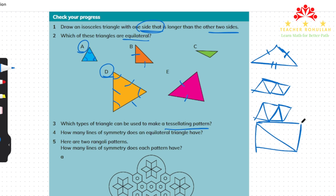If we put the scalene triangles side by side, this forms a tessellating pattern. We can continue making the same thing going on without any gaps between the triangles. So all three types of triangle can make tessellating patterns - the equilateral triangle, the isosceles triangle, and the scalene triangle.